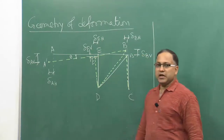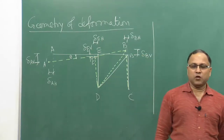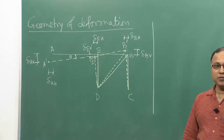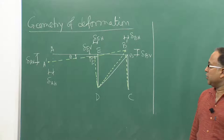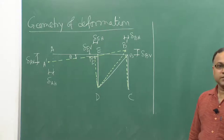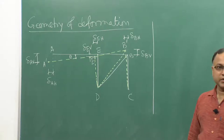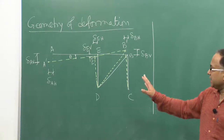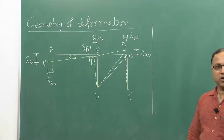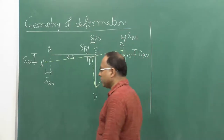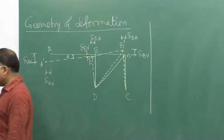Today we are going to find the vertical movement of point A, that is delta_AV. Delta_AH has already been obtained, so now let us see how we can find delta_AV.